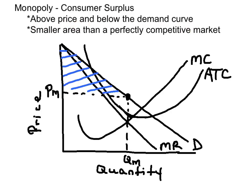A monopolist will produce at MR equals MC, with the price on the demand curve. This is the price that the consumer has to pay for the good. So the area under the demand curve above that price represents the consumer surplus.